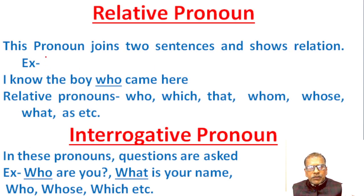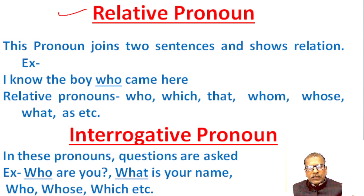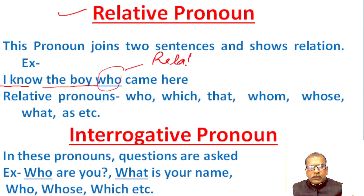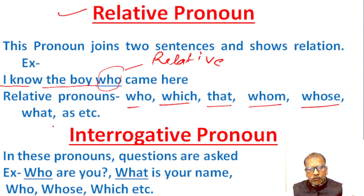Next, relative pronouns. A relative pronoun joins two sentences and shows relation with other words, persons, places or things. Example: 'I know the boy who came here.' In this sentence, 'who' is a relative pronoun because it joins the two clauses. Relative pronouns are: who, which, that, whom, whose, what, as.